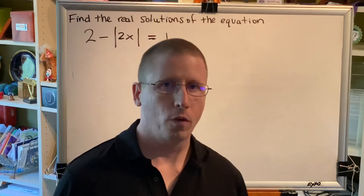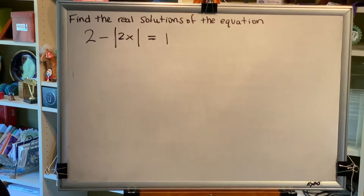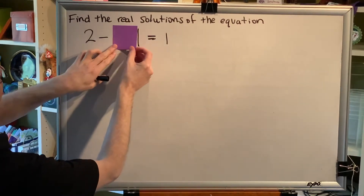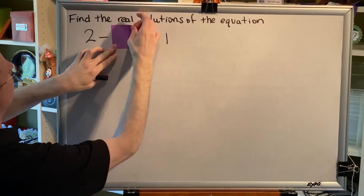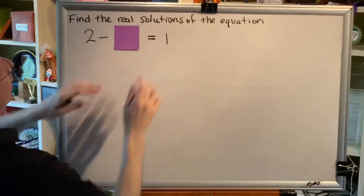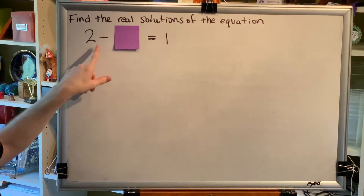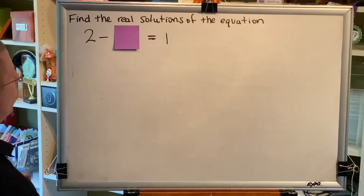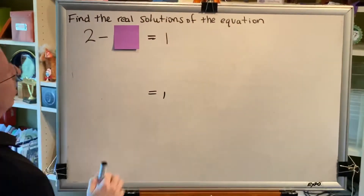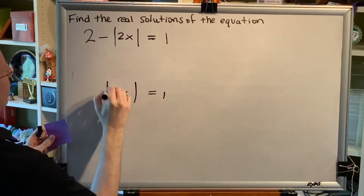Before we go through the formal steps for solving this problem, there's something I'd like you to recognize. Notice that we're solving for x, which is inside the absolute value bars. If I temporarily cover up the absolute value bars, I see 2 minus something equals 1. So 2 minus what gives us 1? The answer is 1. Whatever is behind that purple post-it has to equal 1, so the absolute value of 2x has to equal 1.